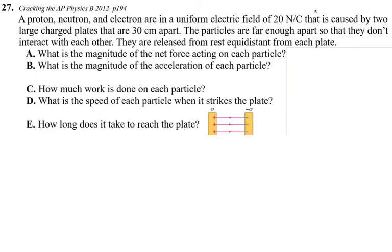I received a message from a student who asked me to solve these questions, so I'm going to add this into our static electricity unit in AP Physics 2 — AP Physics 1 has partially this material too. A proton, neutron, and electron are placed in a uniform electric field of 20 newtons per coulomb, caused by two charged plates 30 centimeters apart. The particles are far enough apart so they don't interact, and they are released from rest, equally distant from each plate. What is the magnitude of the net force acting on each particle?